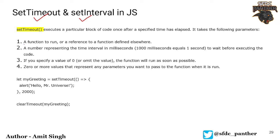When we talk about setTimeout, there are a few parameters that the method contains. The very first parameter is the function — we can call it a callback function — where we can use a complete function declaration or a function reference. The second parameter is the number of milliseconds after which we want to execute the code block. If we specify zero, the function is going to run as soon as possible. We can also pass zero or more additional parameters into setTimeout. So the three key things are: the function, the number of milliseconds, and the additional parameters.